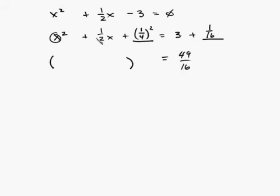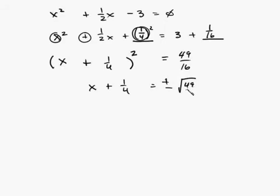Now copy this, copy this, copy that: x plus 1 fourth quantity squared. And you take the square root of both sides. x plus 1 fourth equals plus or minus the square root of 49 sixteenths, which basically is plus or minus root 49 over root 16, which equals plus or negative 7 over 4.